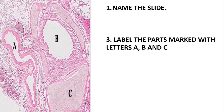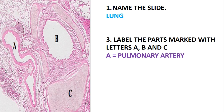Let's quickly look at this slide. The question is: name this slide. From this slide you can see some alveolus, some alveolar sinus, some pulmonary artery, the bronchus, and the cartilage. So this slide is just the lung. Then label the parts marked with letters A, B, and C.